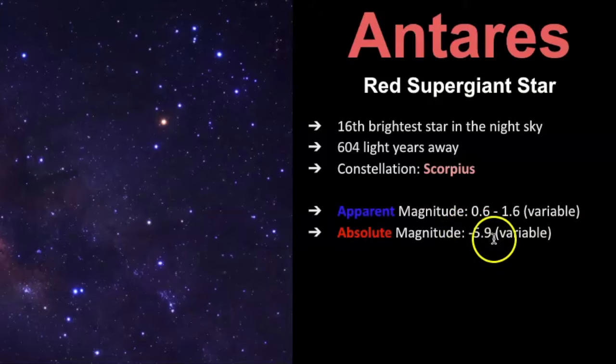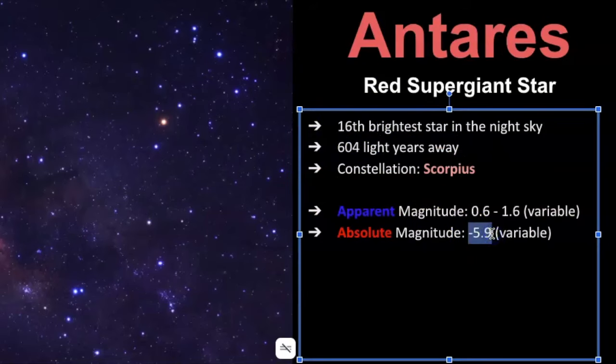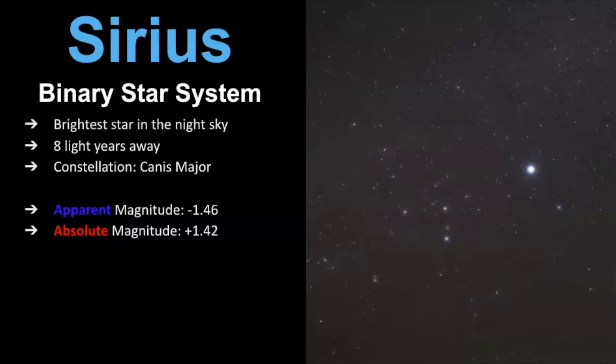But when you look at its absolute magnitude, look how much it changes. It's negative 5.9, which means you're going in the brighter direction. So, if you have a negative value, that means it gets brighter. So, what does this mean? How is this 16th brightest star now have a larger absolute value than, say, the one Sirius right here, which has this absolute value? Well, that's all about its size and temperature.